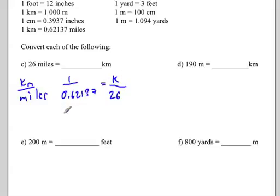So we cross-multiply, so this comes out to be 0.62137k is equal to 1 times 26 is 26. And remember, to solve for k, we have to divide by whatever we're multiplying by. So we're going to divide both sides by 0.62137.